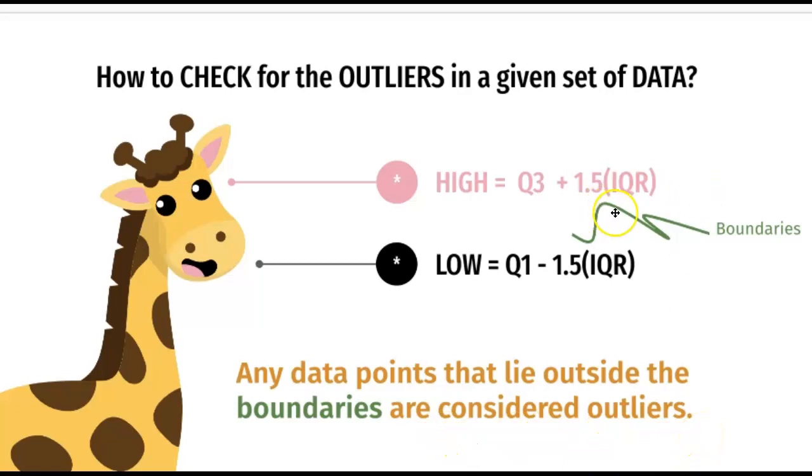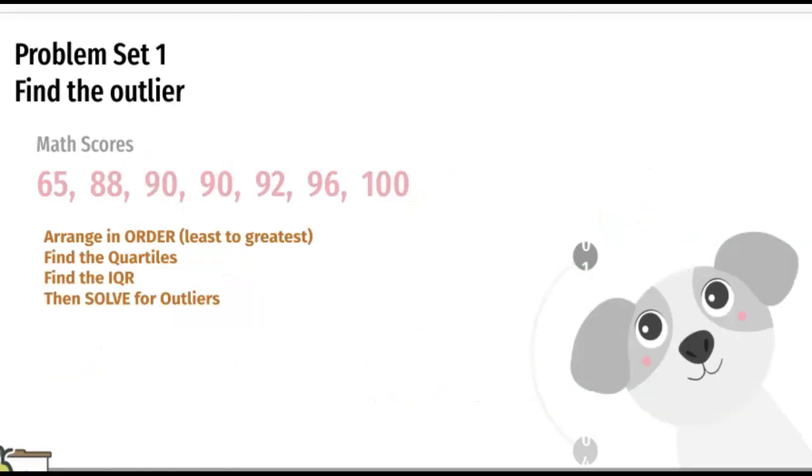For example, if your high is two, anything that's higher than two is an outlier. If your lower is zero, anything below zero is your outlier. Let's check some examples. Problem set one: find outlier. We have this math score: 65, 88, 90, 90, 92, 96, and 100.